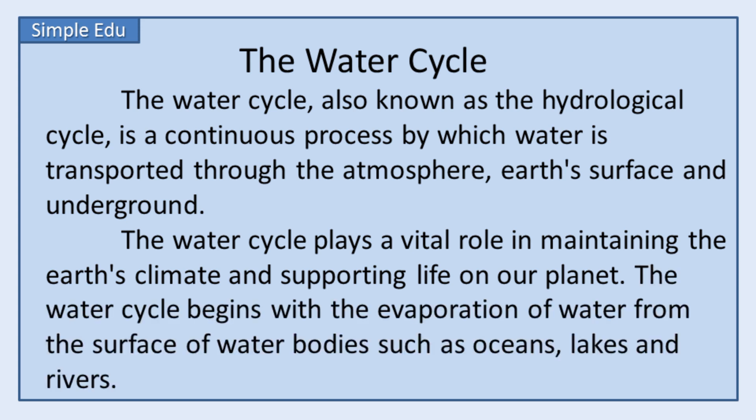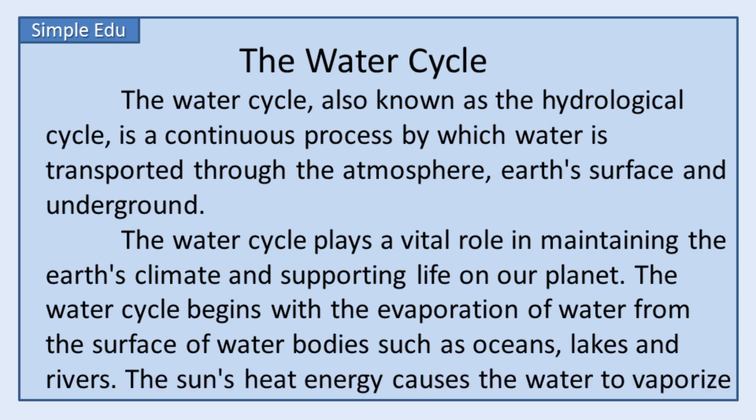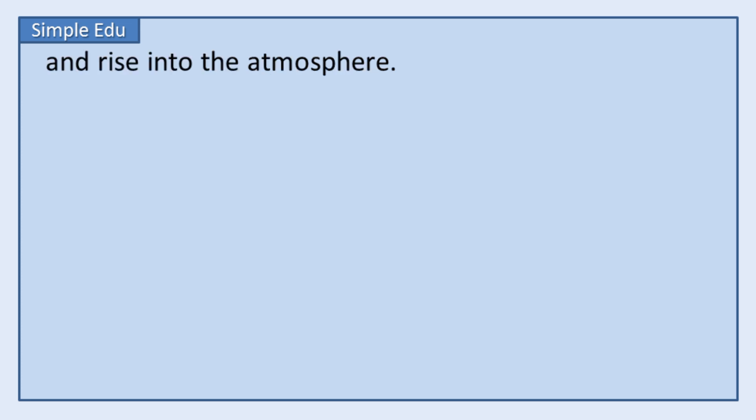The water cycle begins with the evaporation of water from the surface of water bodies such as oceans, lakes, and rivers. The sun's heat energy causes the water to vaporize and rise into the atmosphere.